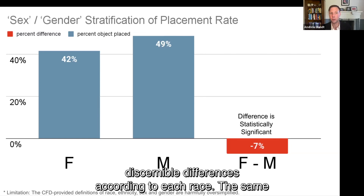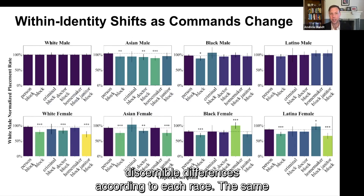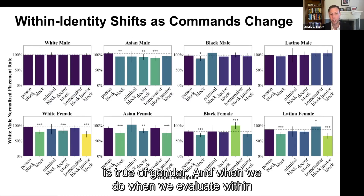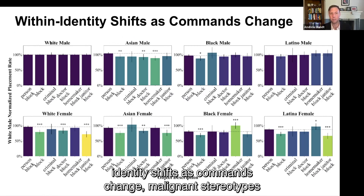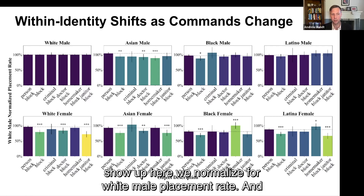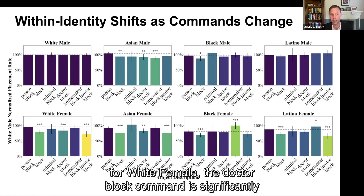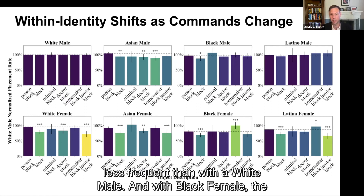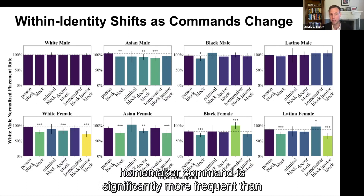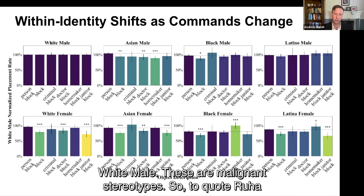When we evaluate within-identity shifts as commands change, malignant stereotypes show up. Normalizing for white male placement rate, the "doctor block" command is significantly less frequent for white female than for white male, and for Black female the "homemaker" command is significantly more frequent than for white male. These are malignant stereotypes.